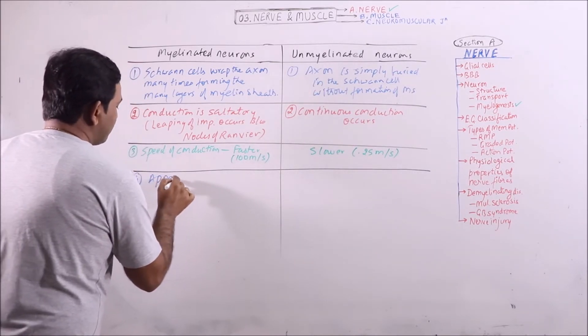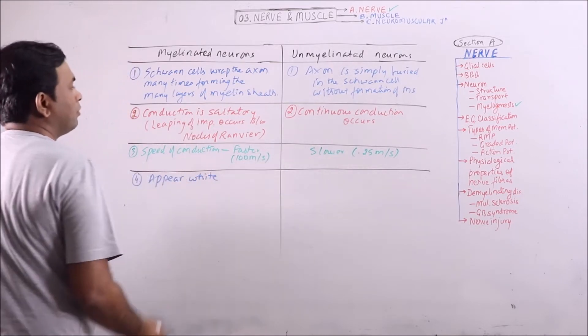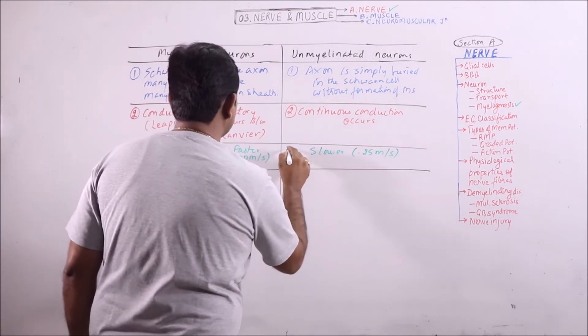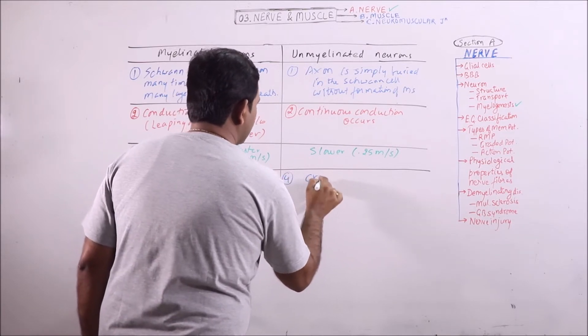These appear white. That is, myelinated parts of myelinated neurons appear white. These appear grey.